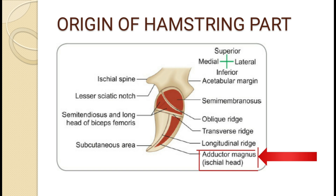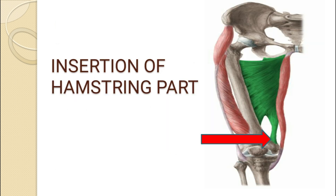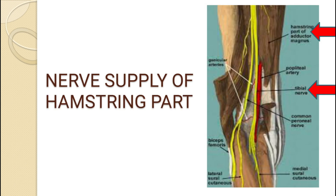The origin of the hamstring part of the adductor magnus muscle is from the inferolateral part of the ischial tuberosity. As we have already seen the regions of the ischial tuberosity, it is easy to understand this origin. It gets inserted into the adductor tubercle. The nerve supply is by the tibial part of the sciatic nerve, and the action is extension of the hip and flexion of the knee.